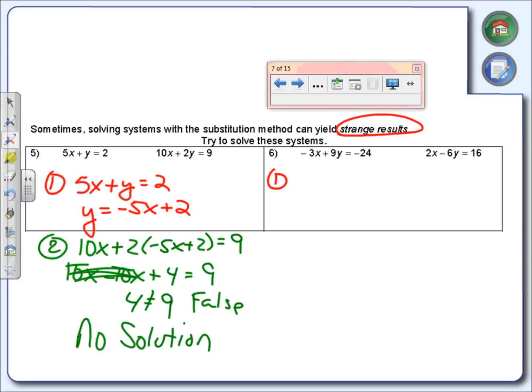Something strange is going to happen on number 6 as well. So first thing I need to do is get a variable by itself. Which variable are we going to get? An x or a y? What are you going to want to do? Y on which one? The first one or the second one? First one. Okay, let's take the first equation. And you say, which one are we going to get by itself? The y? Okay, we'll get y by itself.